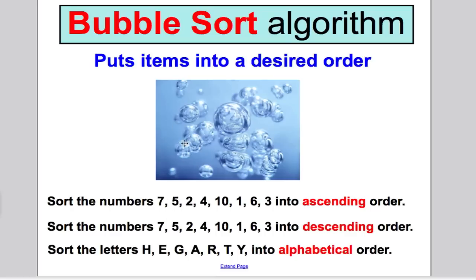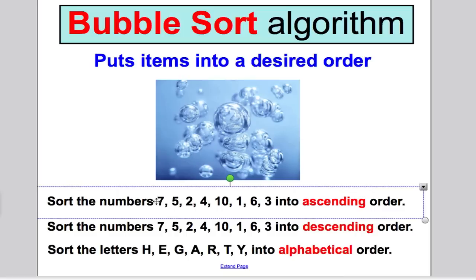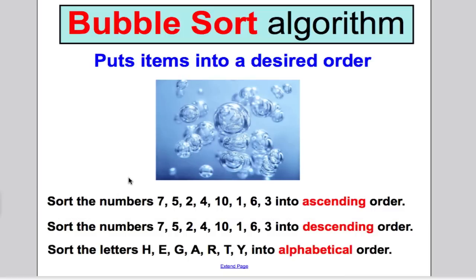Where does it get its name? It gets its name because at the end of each stage of the algorithm, the way the numbers work are kind of like the way bubbles work, fizzing their way to the top of a glass. For example, if we're trying to arrange in ascending order with the smallest first, after each stage the biggest number gets pushed to the back, and then the next stage the next biggest number gets pushed to the back.